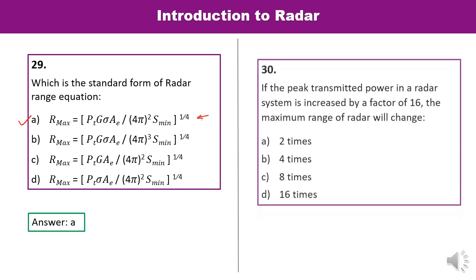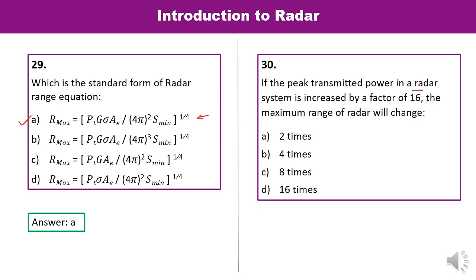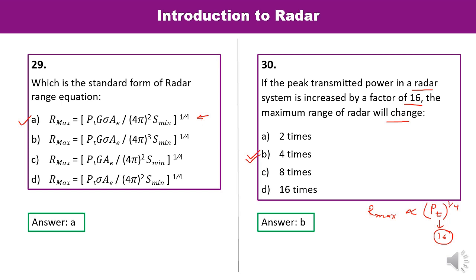Question 30: If the peak transmitted power in a radar system is increased by a factor of 16, how will the maximum range change? Recalling the formula from question 29, R_max is proportional to the transmitted power raised to the power 1/4. If transmitted power is increased by a factor of 16, then 16 raised to the power 1/4 equals 2 — wait, it equals 2. Actually 16^(1/4) = 2, so the maximum range will change by a factor of 2. Let us check — the answer shown is confirmed as correct.